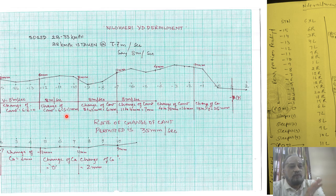In the next second it traveled again 8 meters and the change of cant is 6 to 5, so the rate of change becomes 1 mm per second. Again in the next second it's 5 mm and 11 mm, so the rate of change is 6 mm per second.